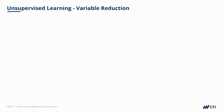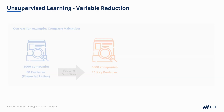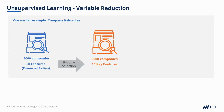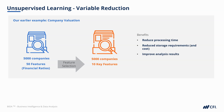The second unsupervised learning technique is variable reduction. In our earlier example of company valuation, we took a set of 50 features and reduced it to 10. The benefits of doing this include reduced processing time, reduced storage requirements and costs, and hopefully improved results of analysis.